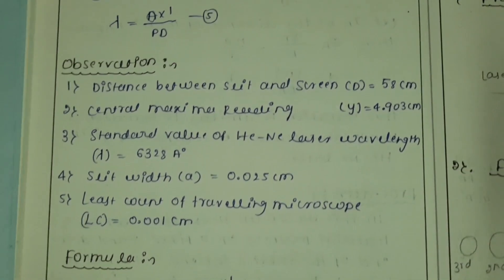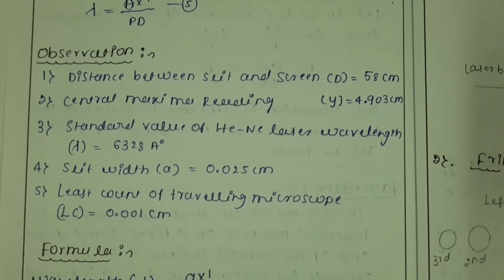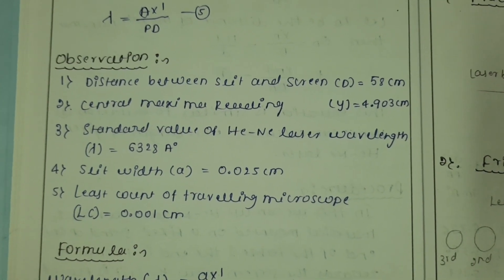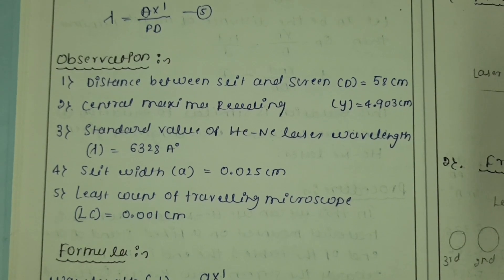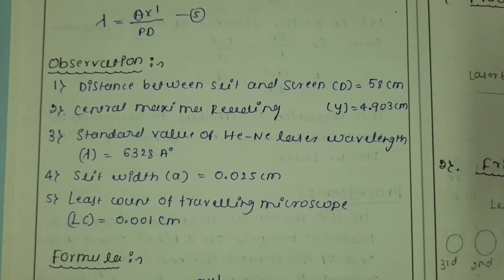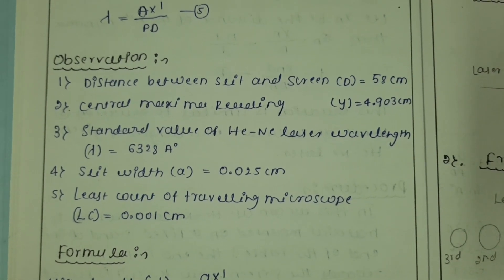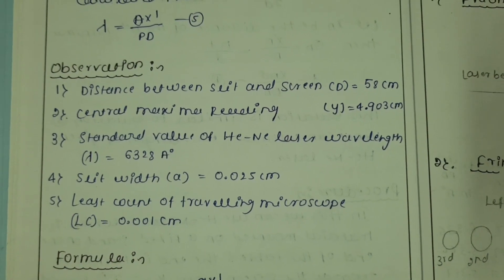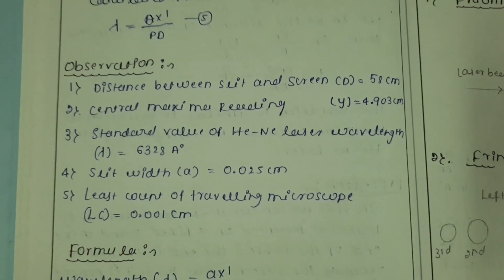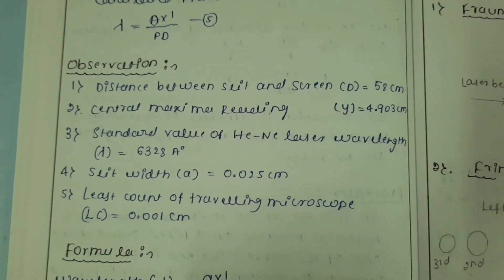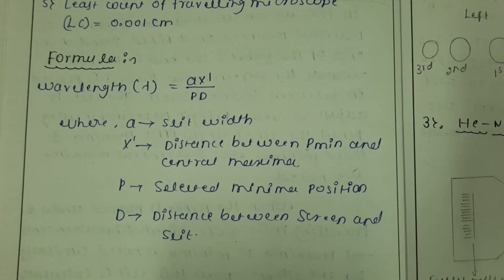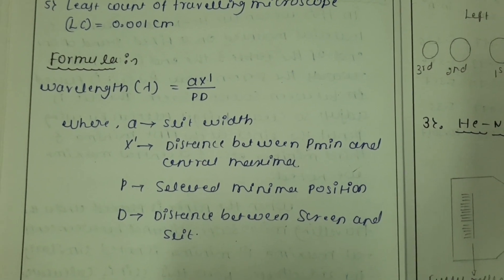Before that, you should note the following observations: the distance between slit and screen, the central maxima reading, the standard value of the helium-neon laser wavelength, slit width, and the least count of the traveling microscope. You require a traveling microscope to measure the diffraction pattern.